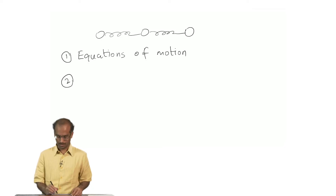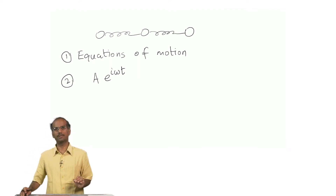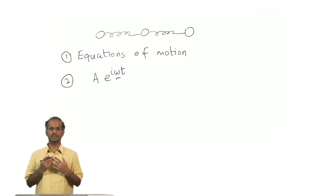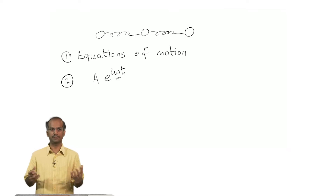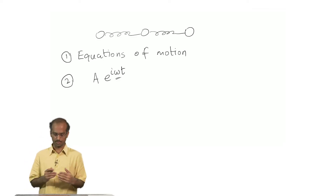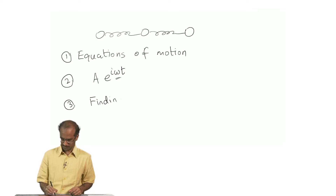You can start by assuming solutions which are of the form a·e^(iωt). For each of the particles you assume that the displacements are of this form, and crucially the important point is that this omega has to be the same for all particles. Different parts of a coupled system cannot in general operate under different frequencies. Once we determined these different possible values of omega, we solved the part of finding normal frequencies.